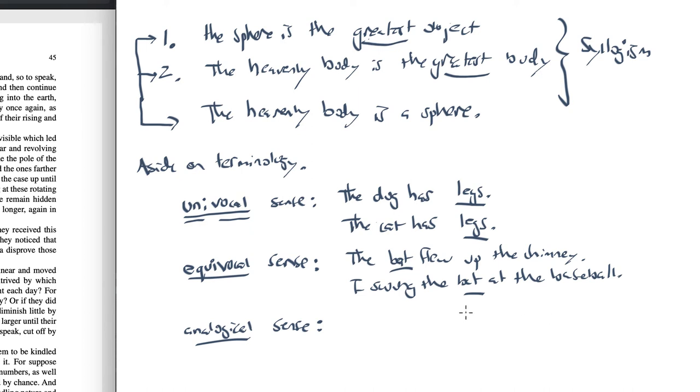Now, what about the analogical sense? What if I say, go back to my first example, the dog has legs? And then consider this phrase, that idea has legs. So I use the word legs in both sentences, but I don't mean the exact same thing by them. But I don't mean something completely different by them either. After all, when I say the dog has legs, I mean it has some ability to get up and move around. And when I say that that idea has legs, I mean that idea might take us someplace. That's a good idea. It can take us from one place to another, right?